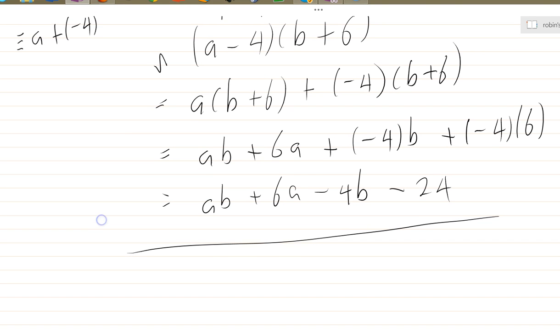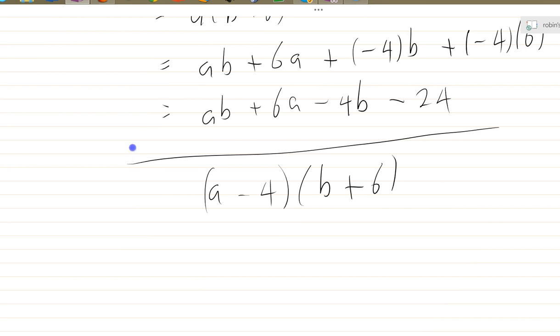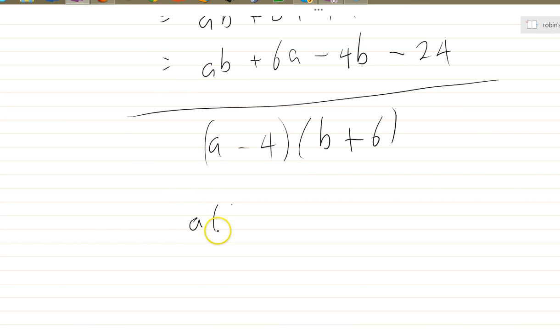However, let me show you how I would do that. a minus 4 times b plus 6. I would say that's a times b plus 6 minus 4 times b plus 6. You see, I would just write down the minus 4 directly. That minus sign just translates to that minus 4 there. So ab plus 6a minus 4b minus 24.